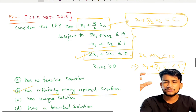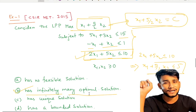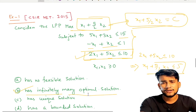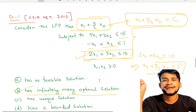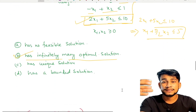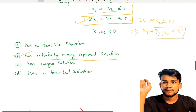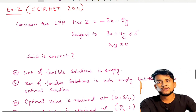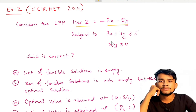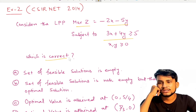Theory is very important for LPP. Up to now we thought LPP only needed graphical or simplex methods, but the theory part is also most important because in some cases solving fully is time-consuming and may not yield a clear answer. When you cannot reach the final answer by computation, the theory part guides you directly.